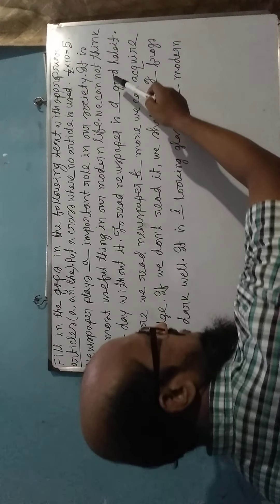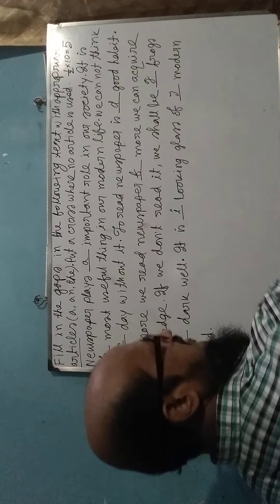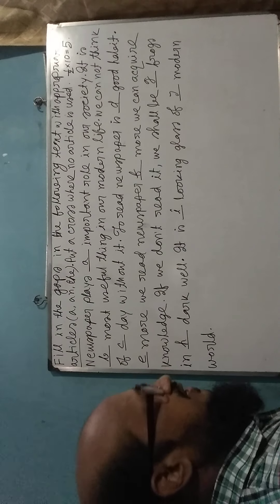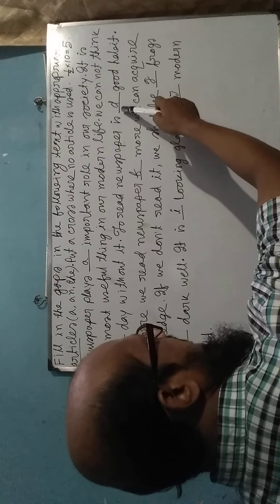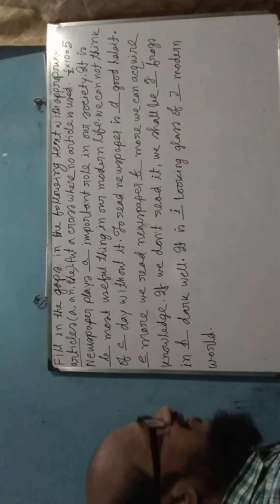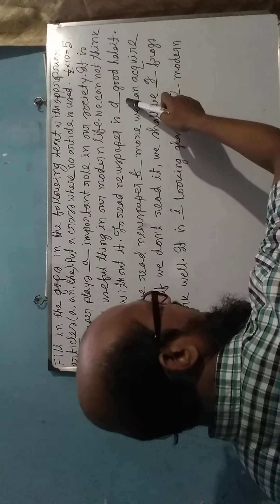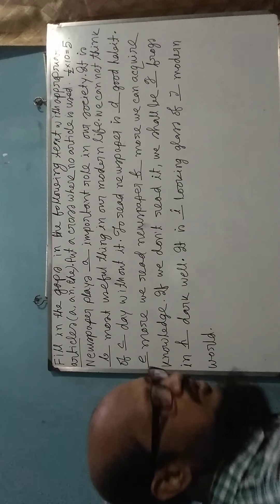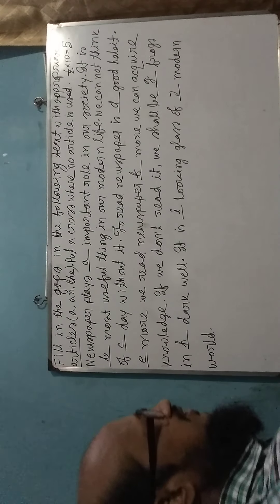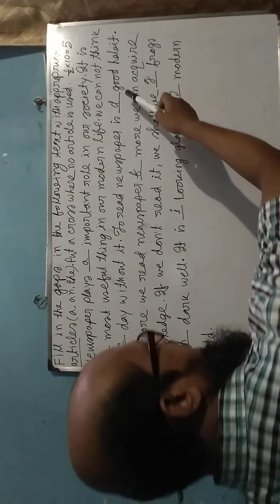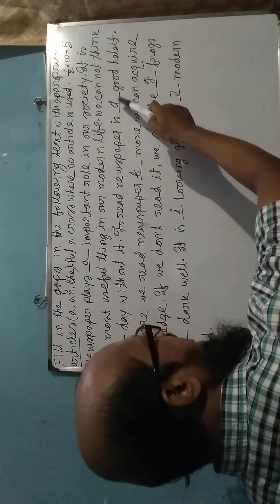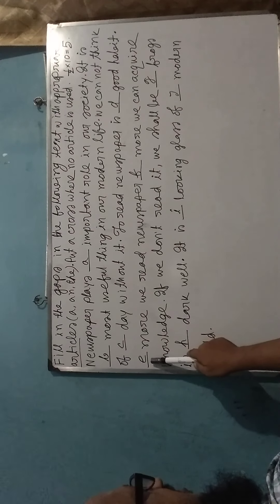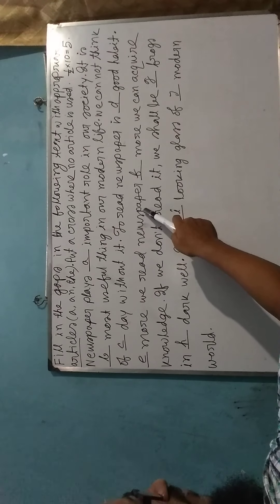The next: 'To read newspaper is [blank] good habit.' Here the word after the blank is 'good,' which is an adjective, and 'g' is a consonant. Before this we have to use an article, and that is 'A.' To read newspaper is a good habit — there are a lot of good habits and it is one kind of good habit. It is not certainly one specific habit, so we have to use 'A' instead of 'The.'